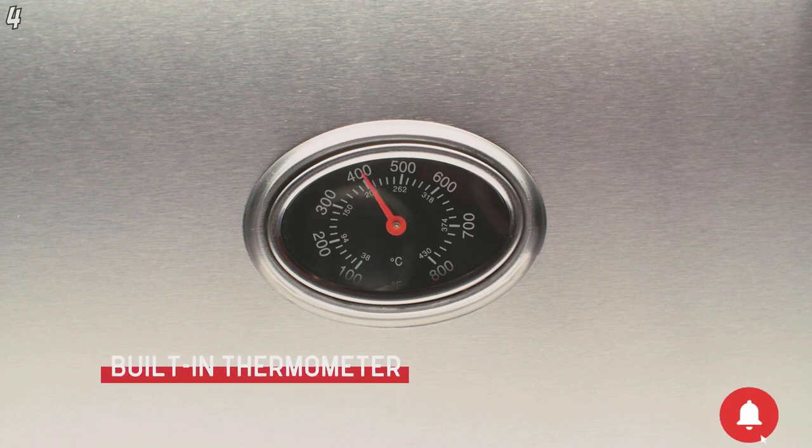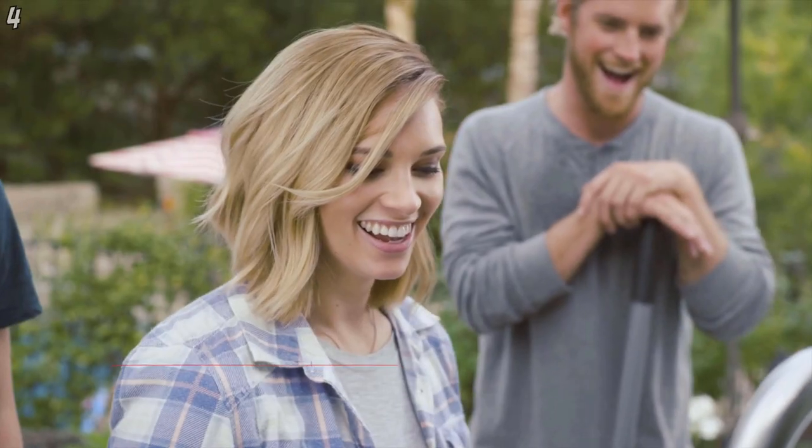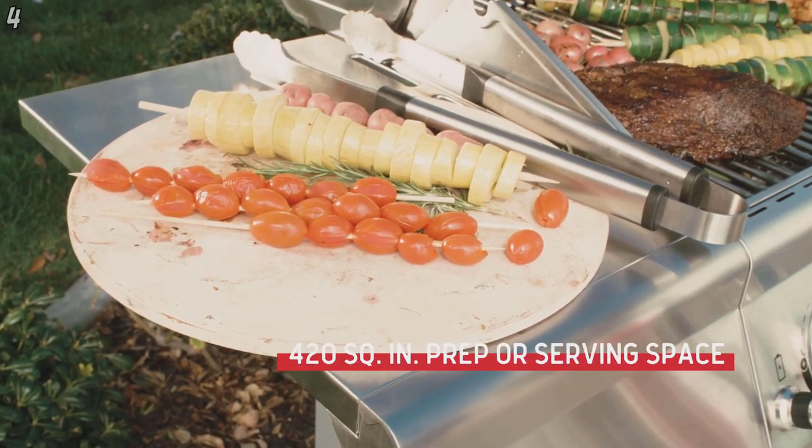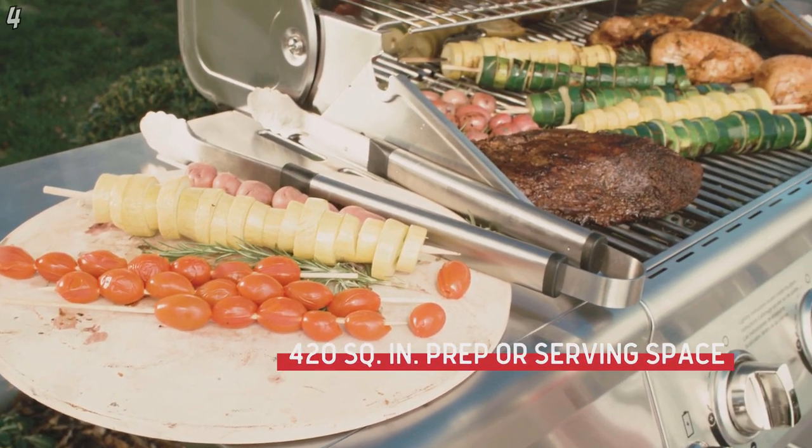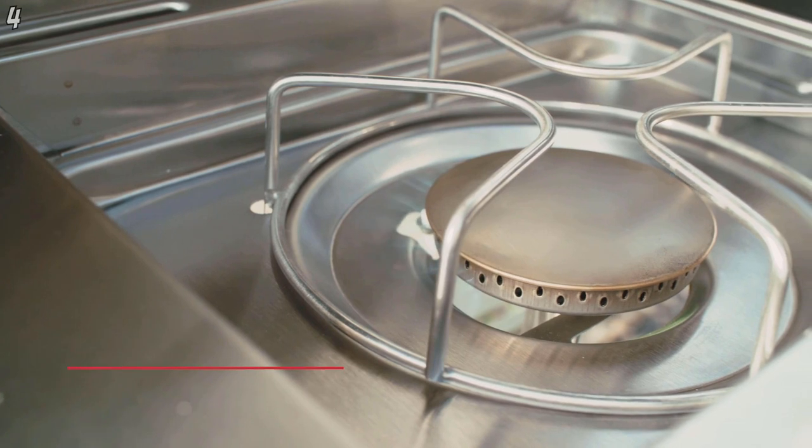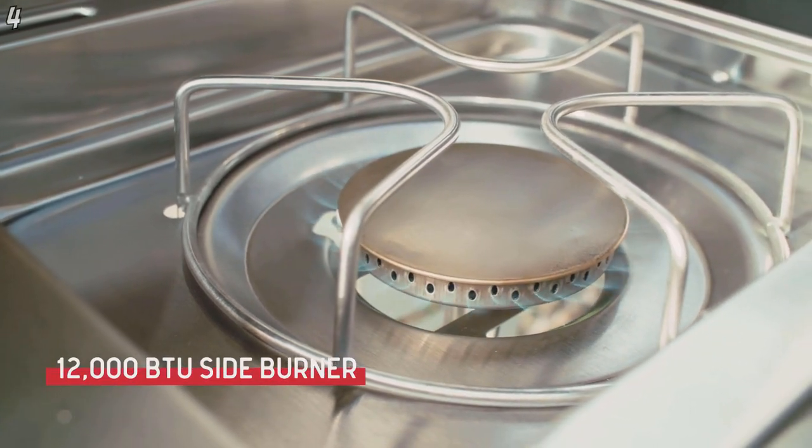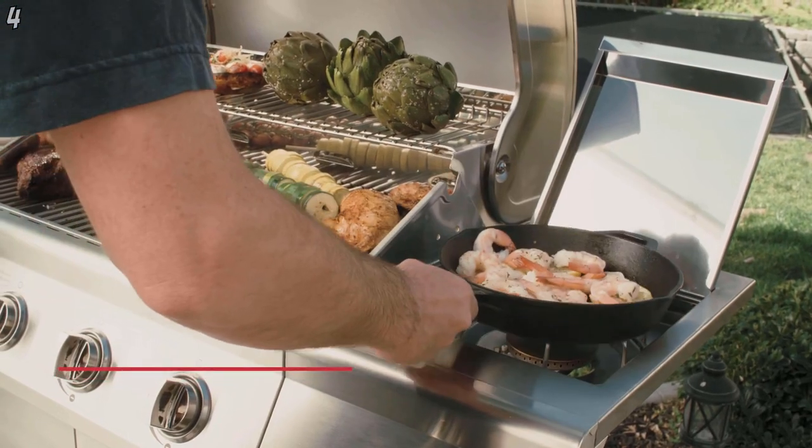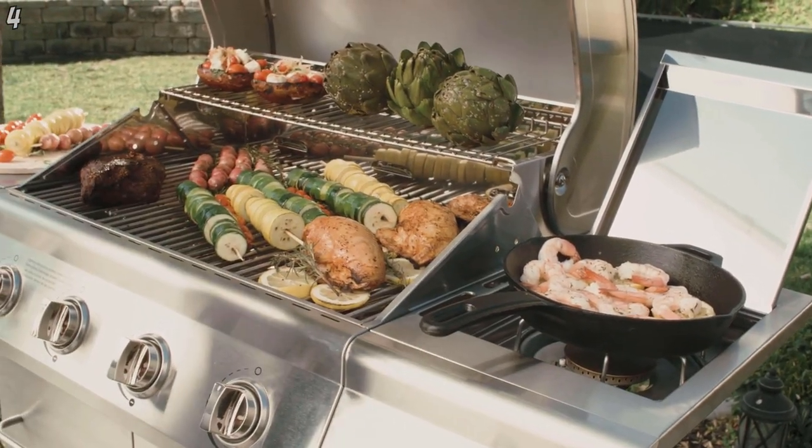The easy-to-read built-in thermometer enables precise temperature regulation. On the sides, 420 square inches of total shelf space are perfect for food prep or serving. When you're ready to simmer, sauté, or boil, just raise the flat surface lid to the 12,000 BTU stainless steel side burner and enjoy.